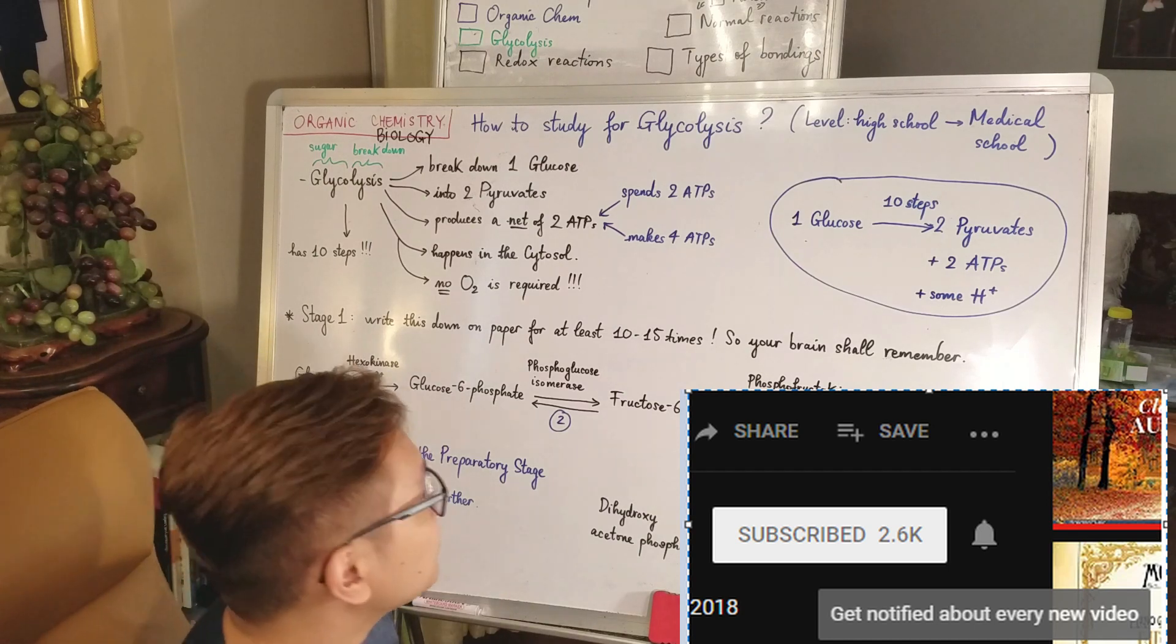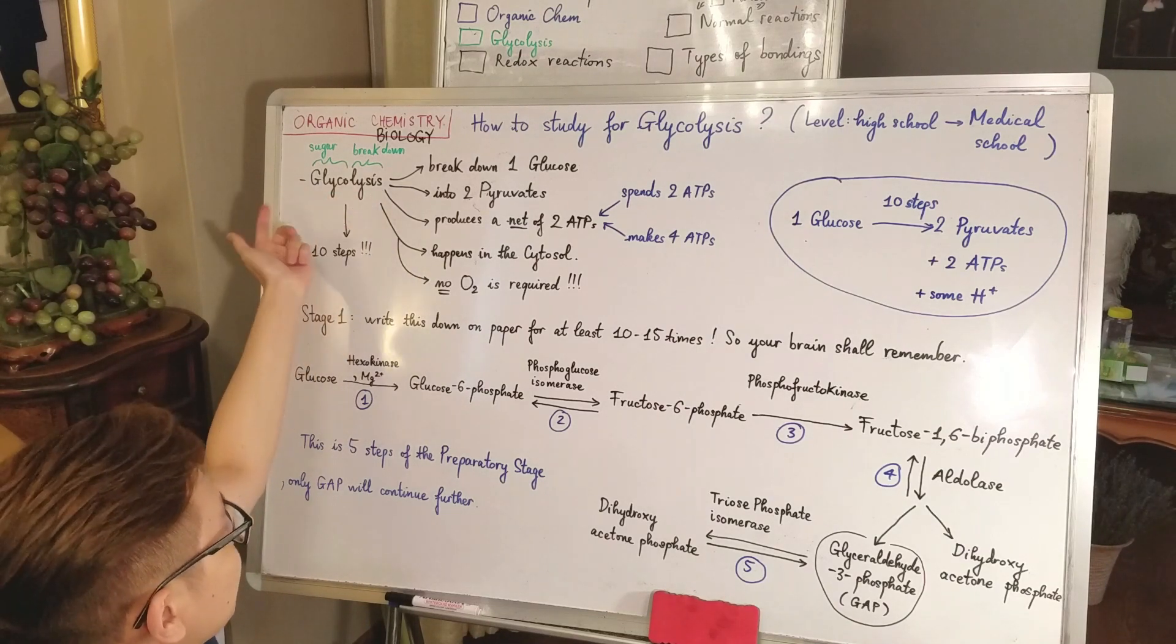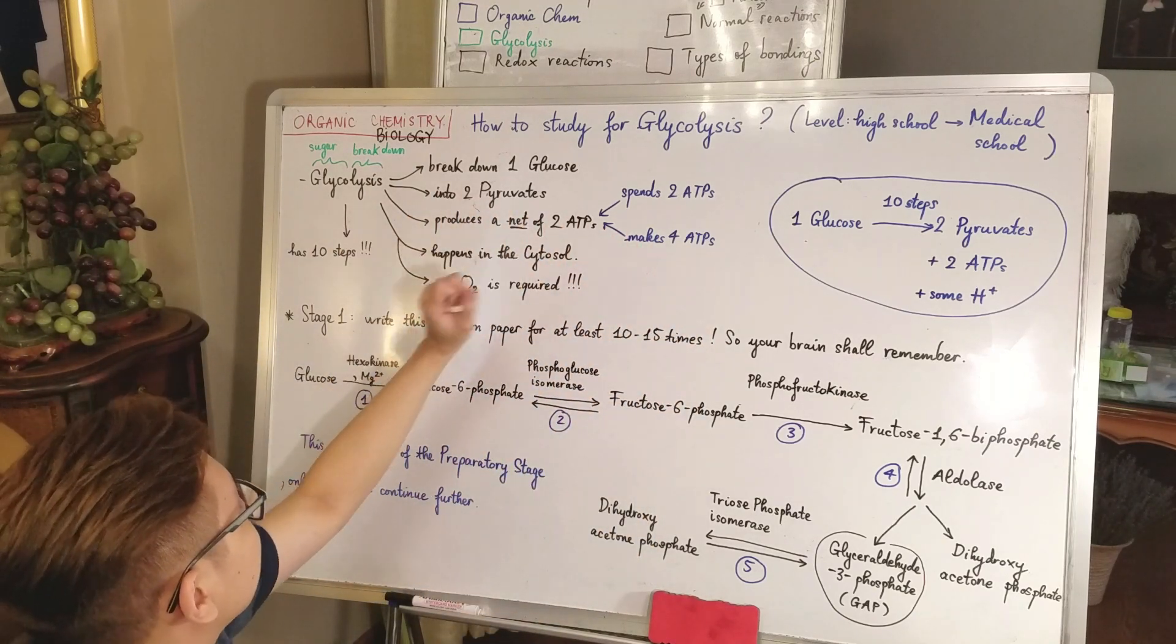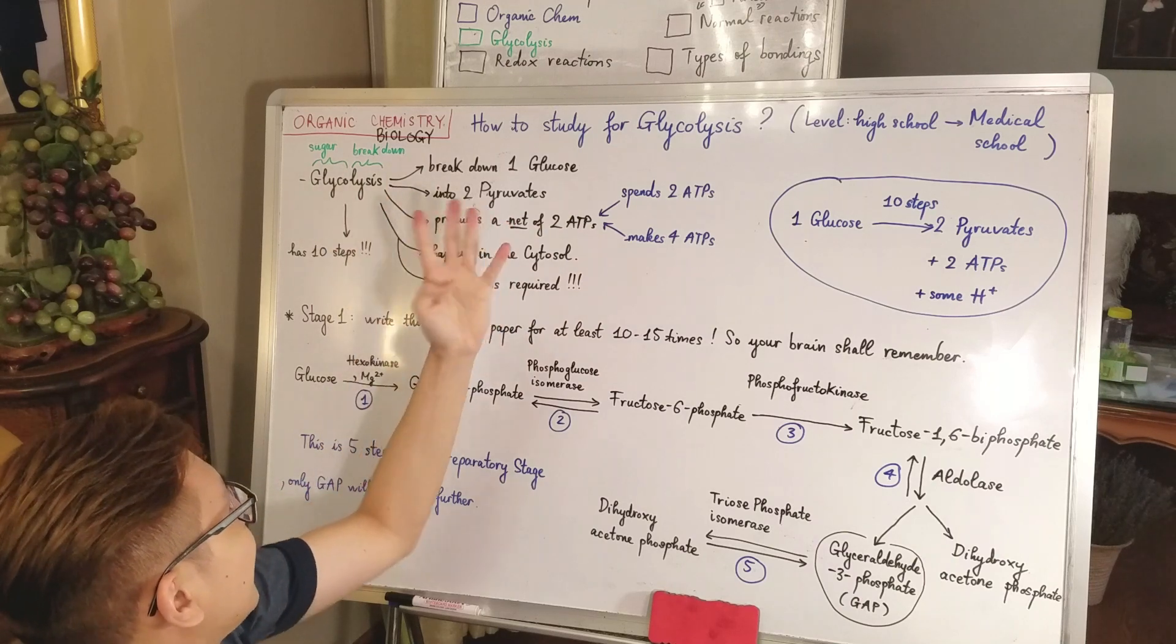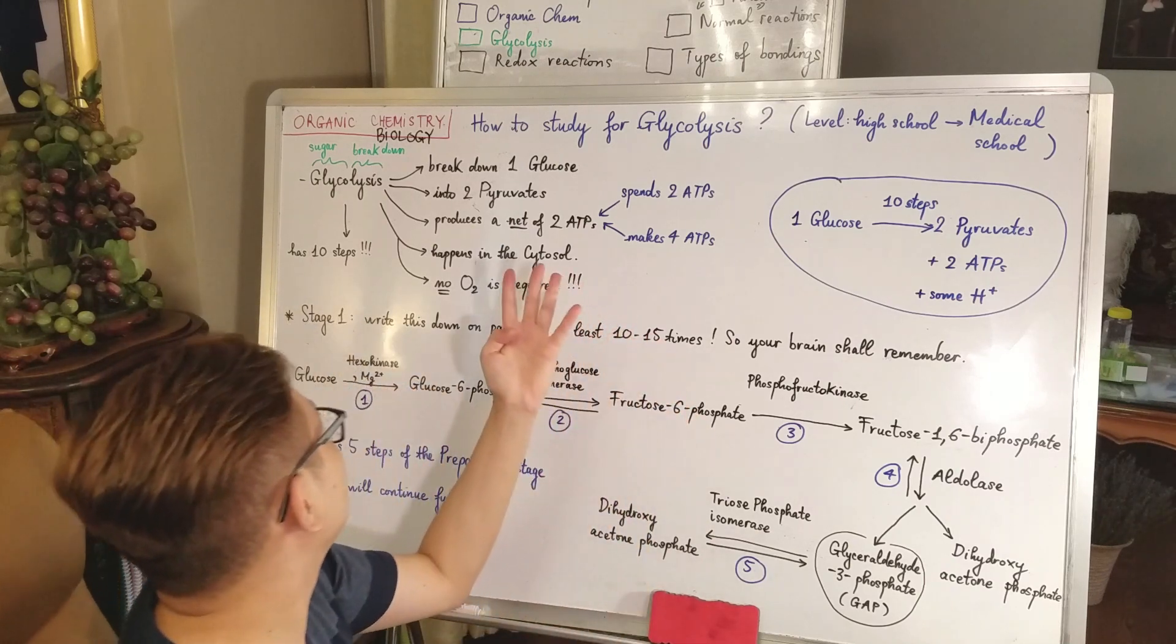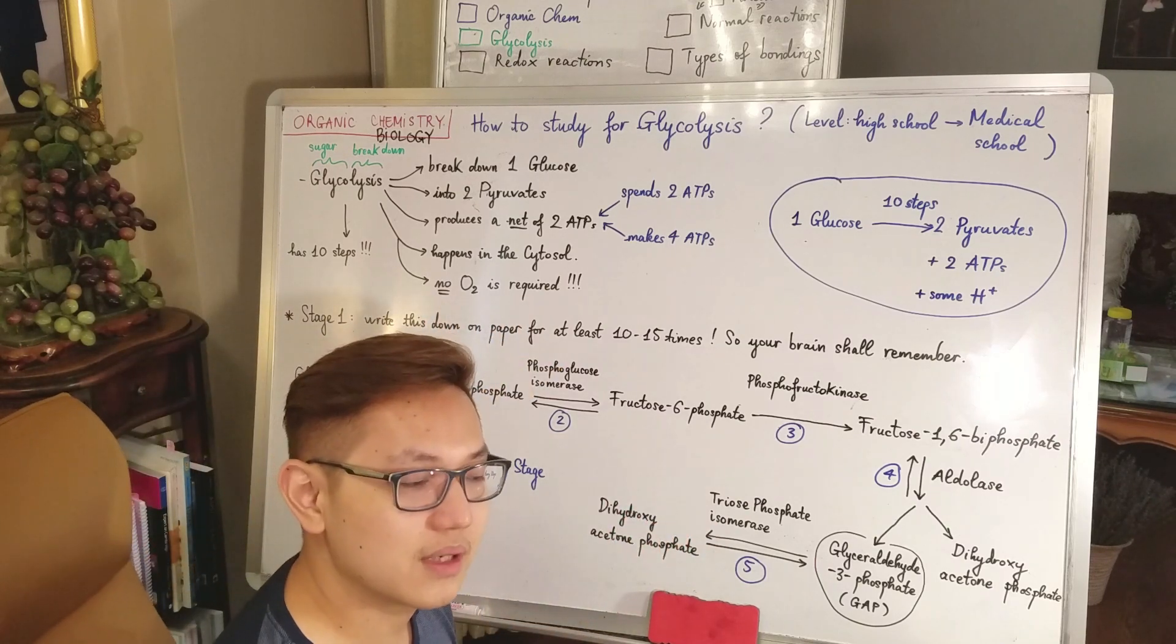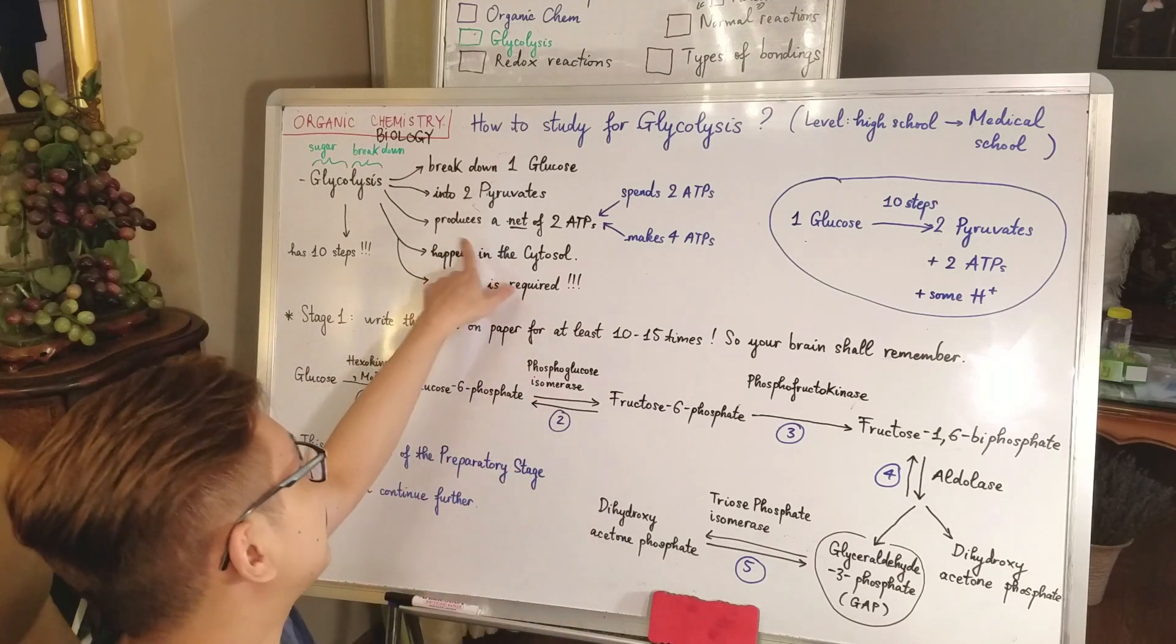First, what is glycolysis? Glyco is sugar and lysis is breakdown. To make it short, glycolysis is a breakdown of one molecule of glucose to produce two pyruvate, two ATP. In total it happens in the cytosol, which is the cytoplasm. Cytoplasm and cytosol are the same thing. It does not require any oxygen, however if there's oxygen there it still happens. It has ten steps. When I talk about producing a net of two ATP...